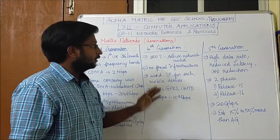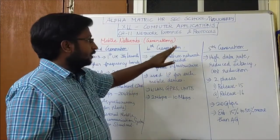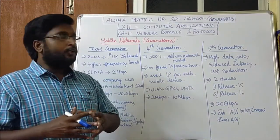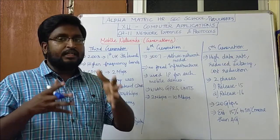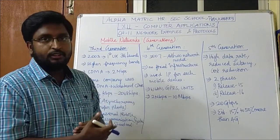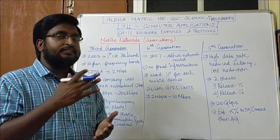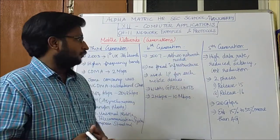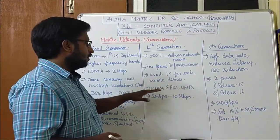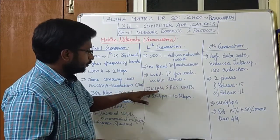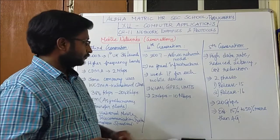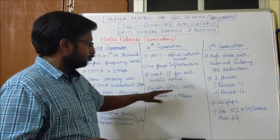The fourth generation was developed in 2007 using the ad hoc network model — meaning there is no fixed infrastructure; a new network model is created based on the current situation. It assigns an IP address to each mobile device, incorporating WLAN, GPRS, and European standards. The data rate increased to 2 Mbps to 10 Mbps.